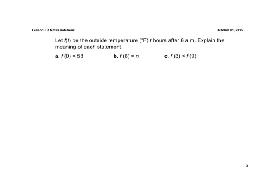So t hours after 6 a.m. So in this first example for a, it's f of 0. So what that means is it's 0 hours after 6 a.m. So really what this means is at 6 a.m., the temperature is what that equals, is 58 degrees.